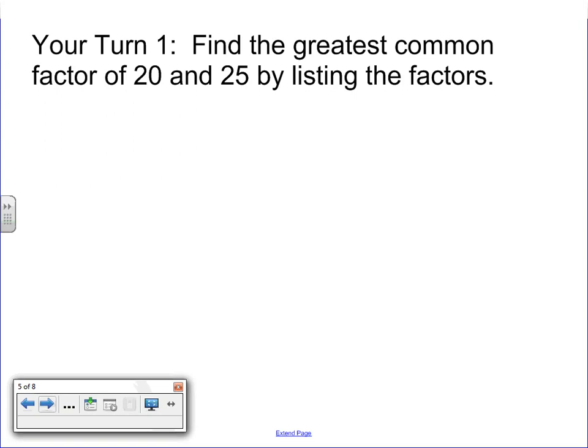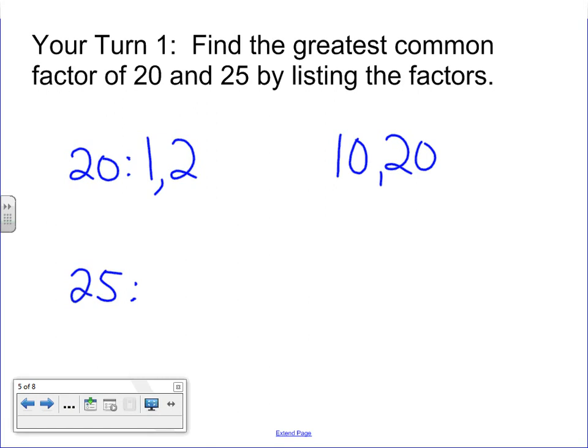Alright, let's see how this went for you. We're going to look at 20 and 25. Hopefully, you start off with the most obvious and the easiest. 1 and 20. From there, 2 times 10 is 20. 3 does not work. 4 will work. 4 times 5. And that's our list. Again, I hope you start with the easiest one for this one here. For 25. 1 and 25.